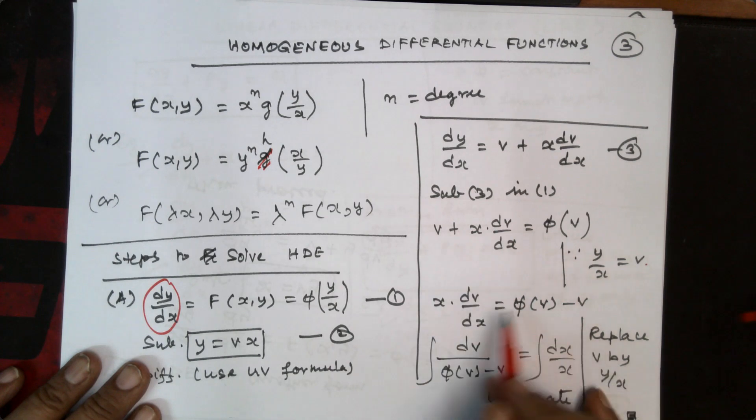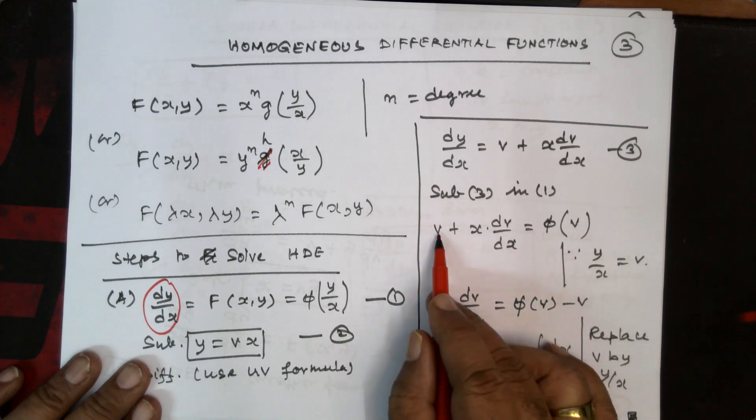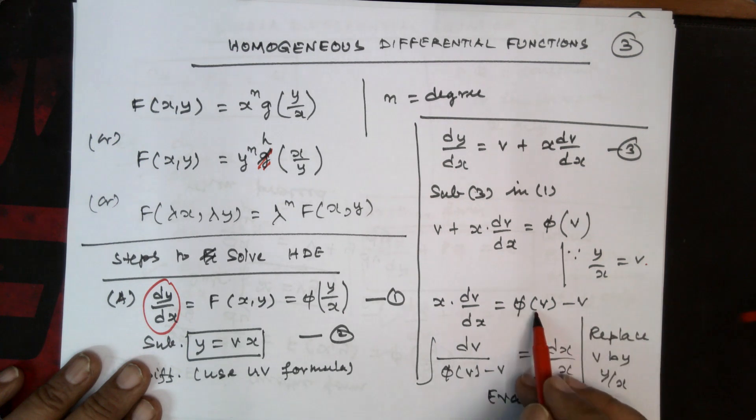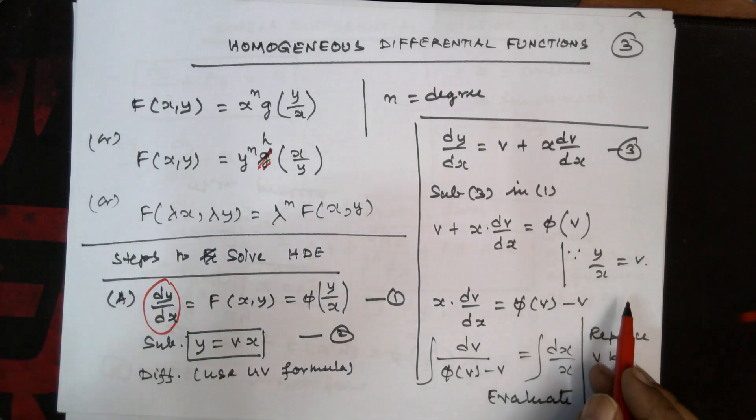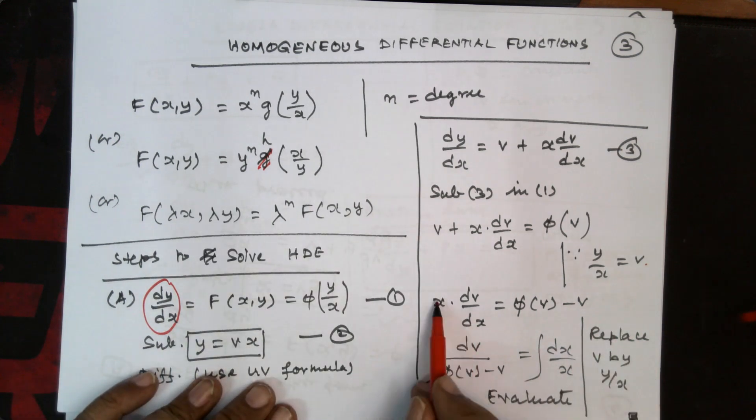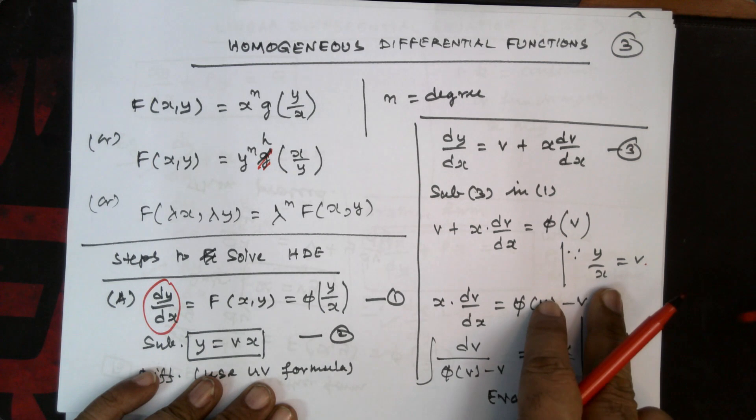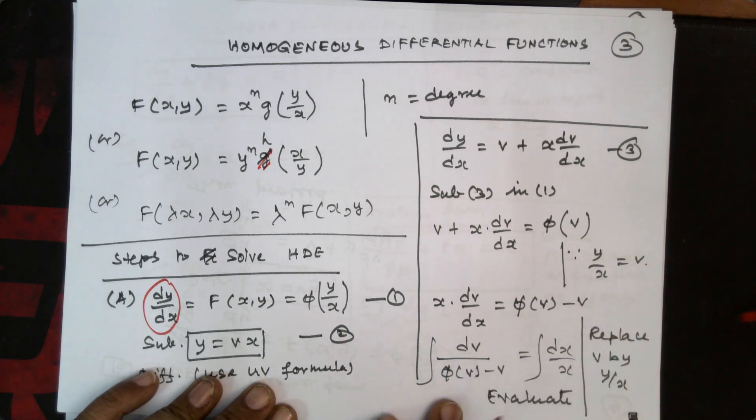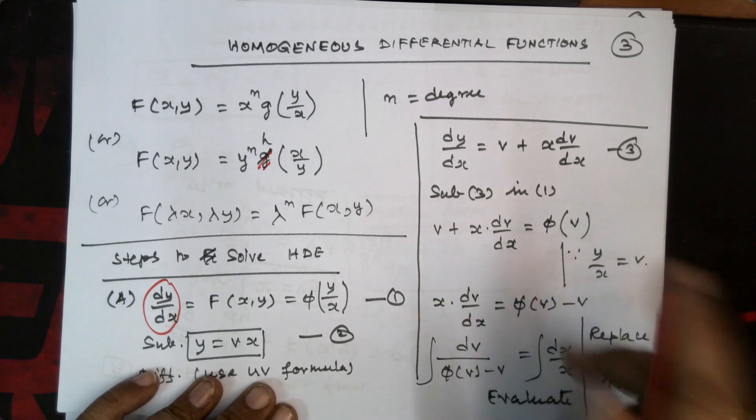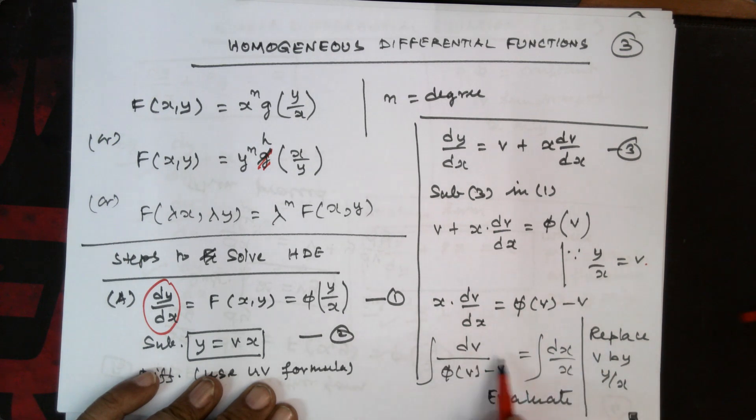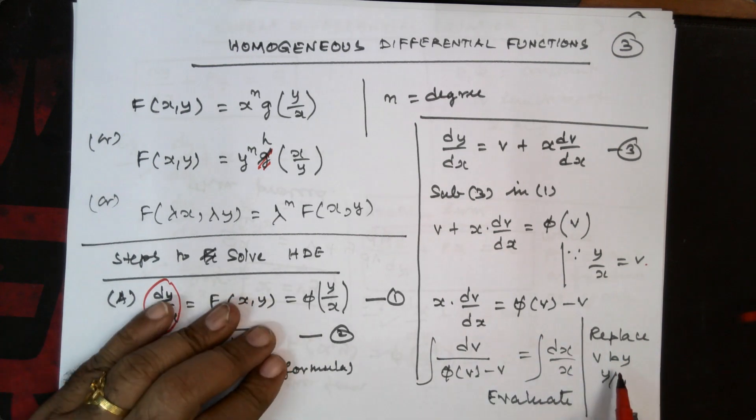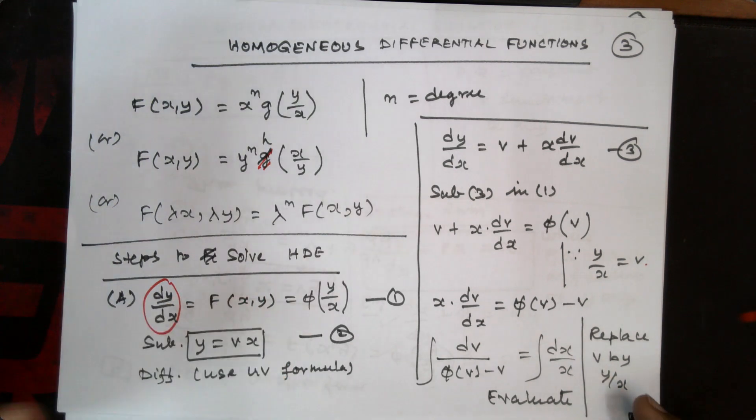Now we will try to isolate this. So x into dv by dx is equal to, the v can be brought to the other side, so phi of v minus v. Now the dx and the x can be isolated on the other side. We can bring this to the other side and bring the phi of v minus v to the LHS. So dv by phi of v minus v equals dx by x. Now you can integrate because we have isolated v and x. And finally, what we are supposed to do? We have to replace the v by y by x. So this is one strategy.